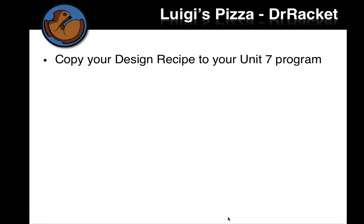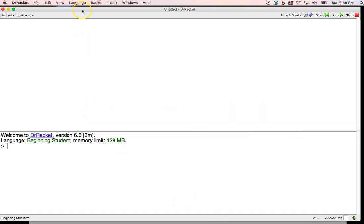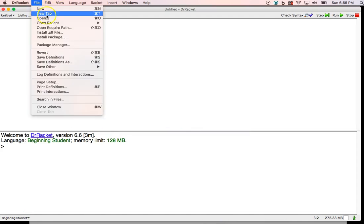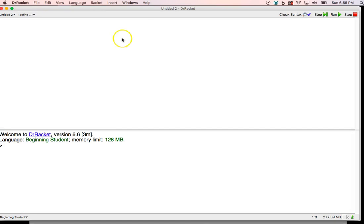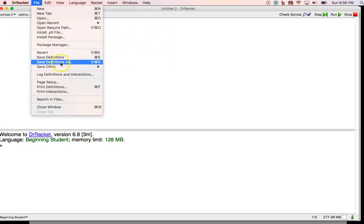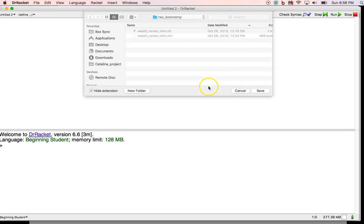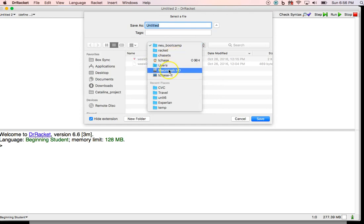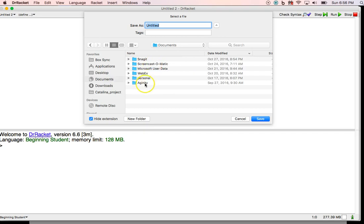So take your design recipe from that previous page. So hopefully you have that all written down. If you don't, go back and write all that down. And then let's make a unit seven program. So I'm going to switch over to Dr. Racket. If you already have something in your racket, then you can go under file, and choose new, and you'll get a new blank window here. So then let's go under file, let's choose save definitions as. And then just save it into where your documents are. Let me navigate to it first.